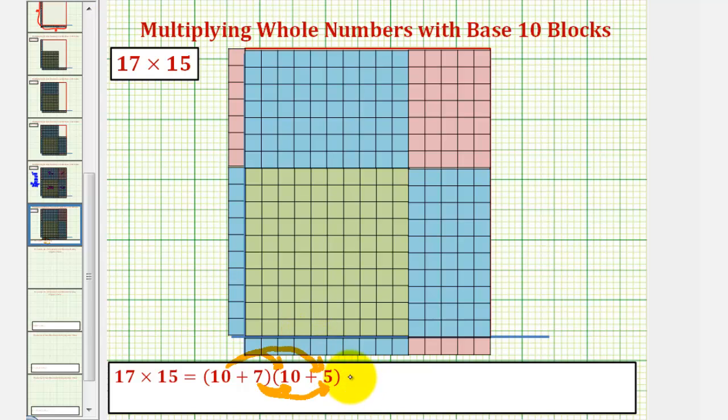So let's go ahead and find these partial products and compare it to the area of the rectangle that we built. So 10 times 10 is 100, plus 10 times 5 is 50, plus 7 times 10, that's 70, plus 7 times 5 is 35.